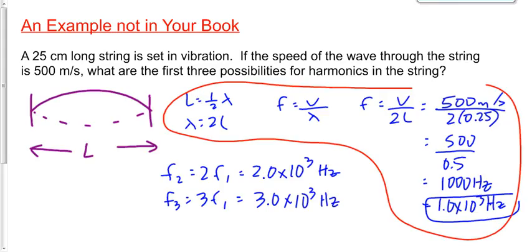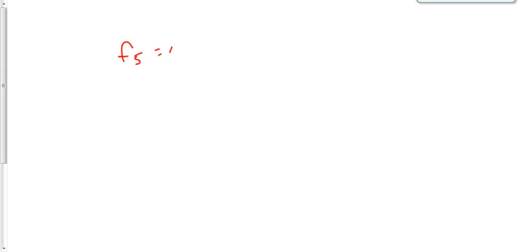The third harmonic: multiply the first by 3. The 17th harmonic: multiply by 17. What if the question said the value of the fifth harmonic is 5,000 hertz — what's the value of the first harmonic? Would you derive an equation? Probably just divide by 5, because the first harmonic is one-fifth of the fifth harmonic. What if they said the fifth harmonic is 5,000 — what's the value of the second harmonic?